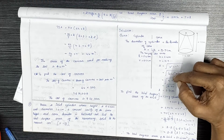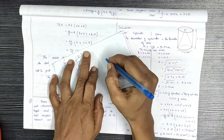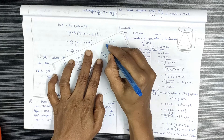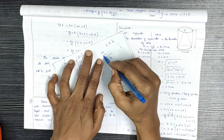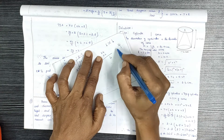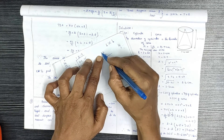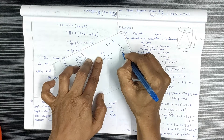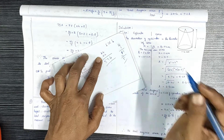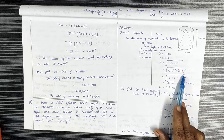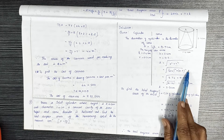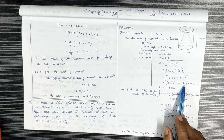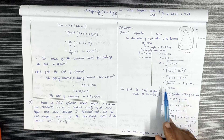The slant height L equals √(h² + r²) = √(2.4² + 0.7²). Calculating: 2.4² = 5.76, and 0.7² = 0.49. So √(5.76 + 0.49) = √6.25 = √(625/100) = 2.5cm. Therefore L is equal to 2.5cm.